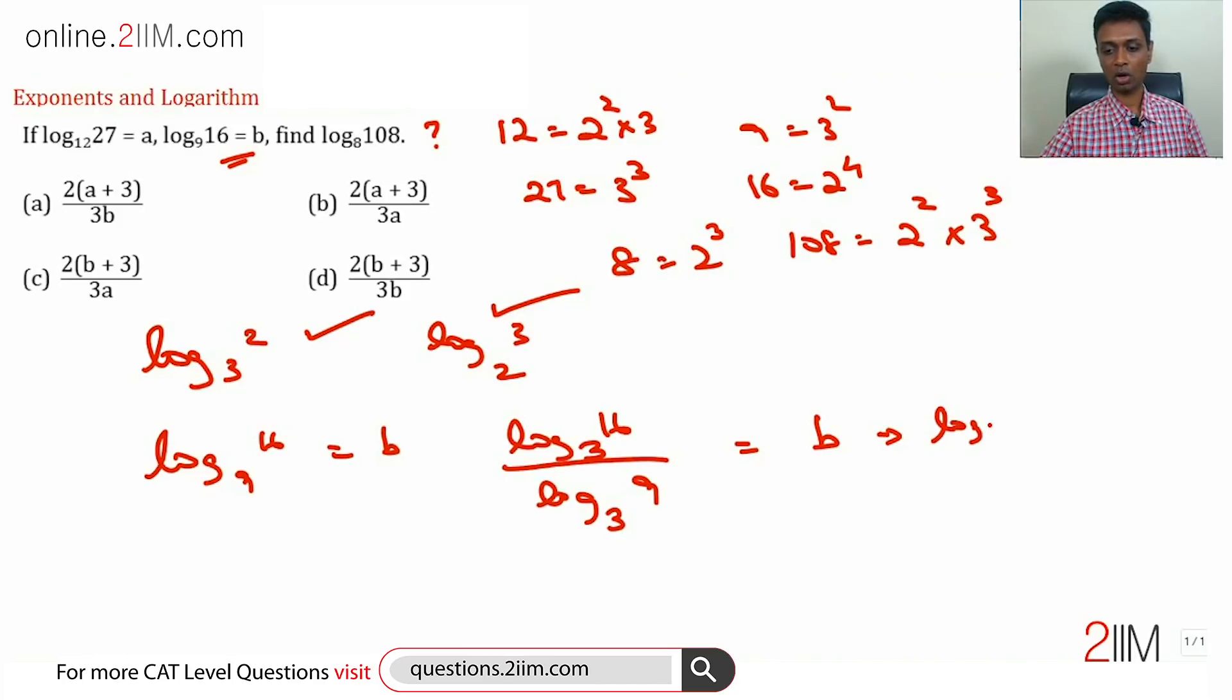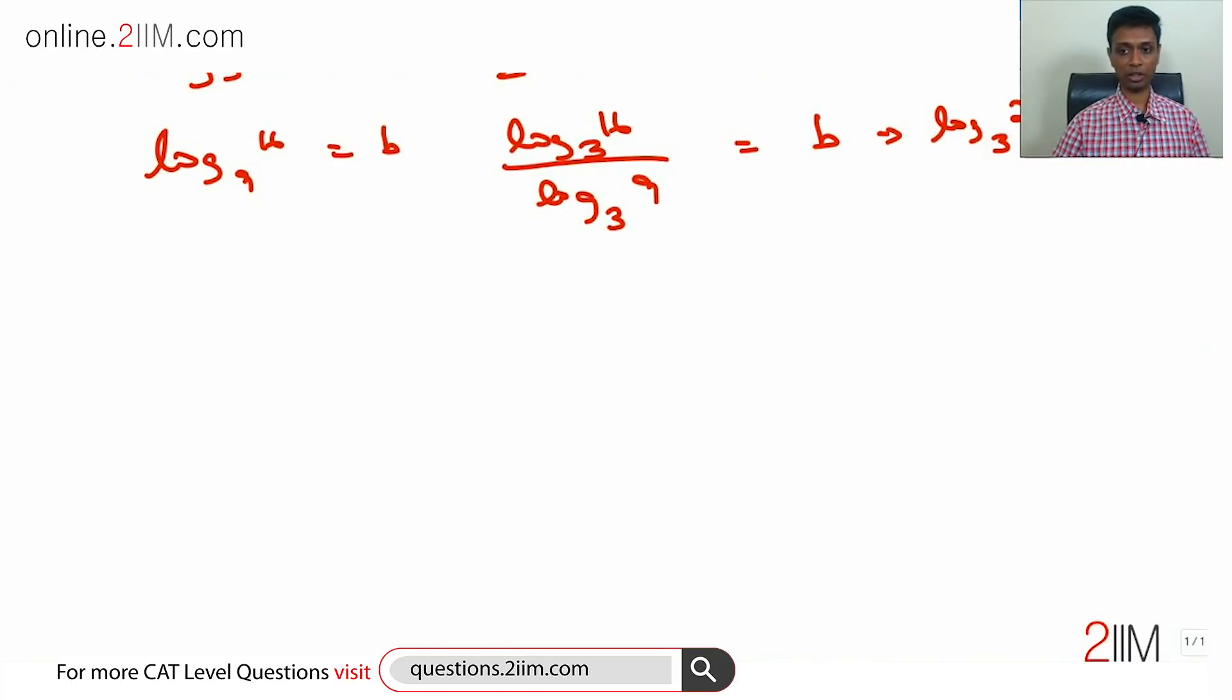Log 2 to the power 4 to the base 3 is 2b. I'm going to simplify that. I'm just going to scroll down a little bit and then simplify this. 4 times log 2 to the base 3 is 2b.